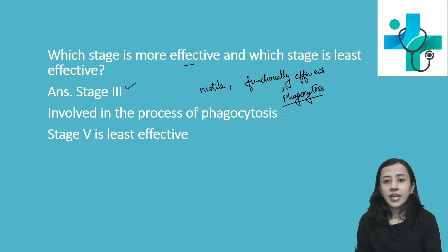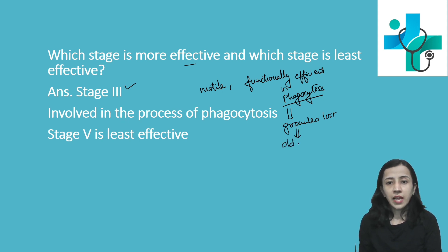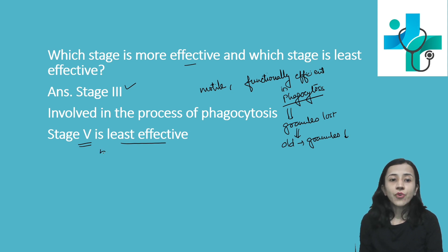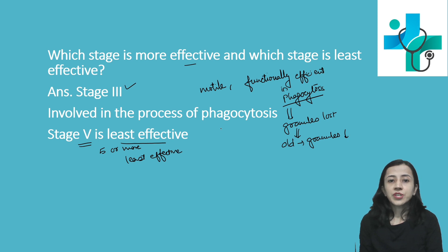When phagocytosis occurs, cells lose their granules. As the cell becomes old and senile, granule content is reduced. Therefore, neutrophils with five or more lobes are least effective in the function of phagocytosis because their granules are lost.